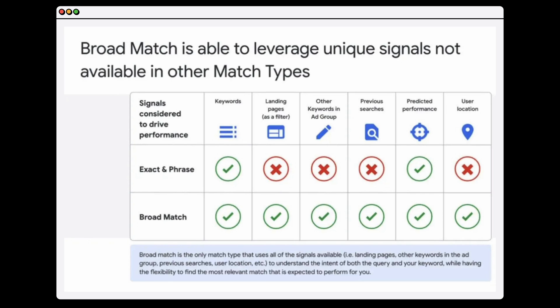What I want to take you through now is that really little-known feature about broad match keywords, and the best way to explain this is to jump into a screen share. What we're looking at here is the different types of match types — exact, phrase, and broad match — and the different signals that Google assigns to each of these keywords. All three function on keywords, but broad match also looks at additional signals: the landing page the ad is going to, other keywords in the ad group, the user's previous searches — which is really important as Google increasingly looks at search history — and the user location. The most important point is that broad match is the only keyword match type that uses all of these available signals.